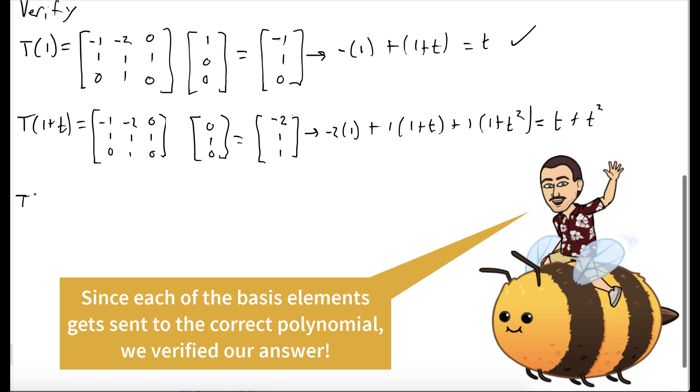The B-coordinates for the final basis element is [0, 0, 1]. So we multiply our matrix times the vector [0, 0, 1], and we get the vector [0, 1, 0], which corresponds to 1 times the second basis element, which is 1+t, which is exactly what we expected.